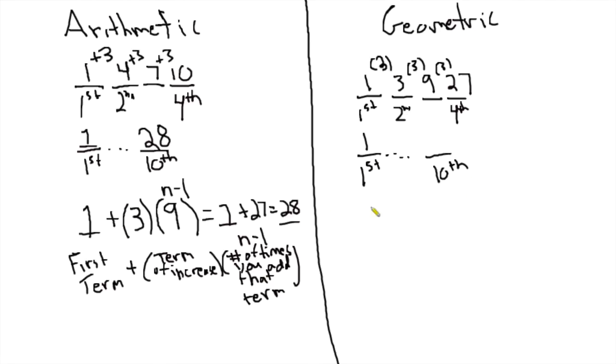Well, like with the arithmetic sequence, we start with 1. And then instead of adding 3, we're multiplying by 3. So we say 1 times 3. And how many times are we multiplying 1 by 3? We're multiplying 1 by 3. In this case, we multiply 1 by 3 three times. 1, 2, 3. 1, 2, 3.